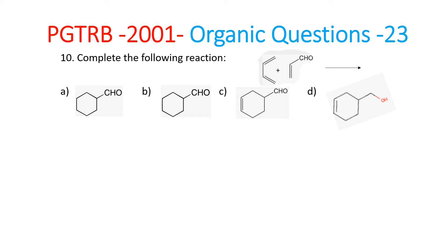Welcome to my channel Winchem. Today we are going to see PGTRB 2001 organic equations. Question 23, which is question 10, is: complete the following reaction. This is butadiene plus acrolein — what will the product be?